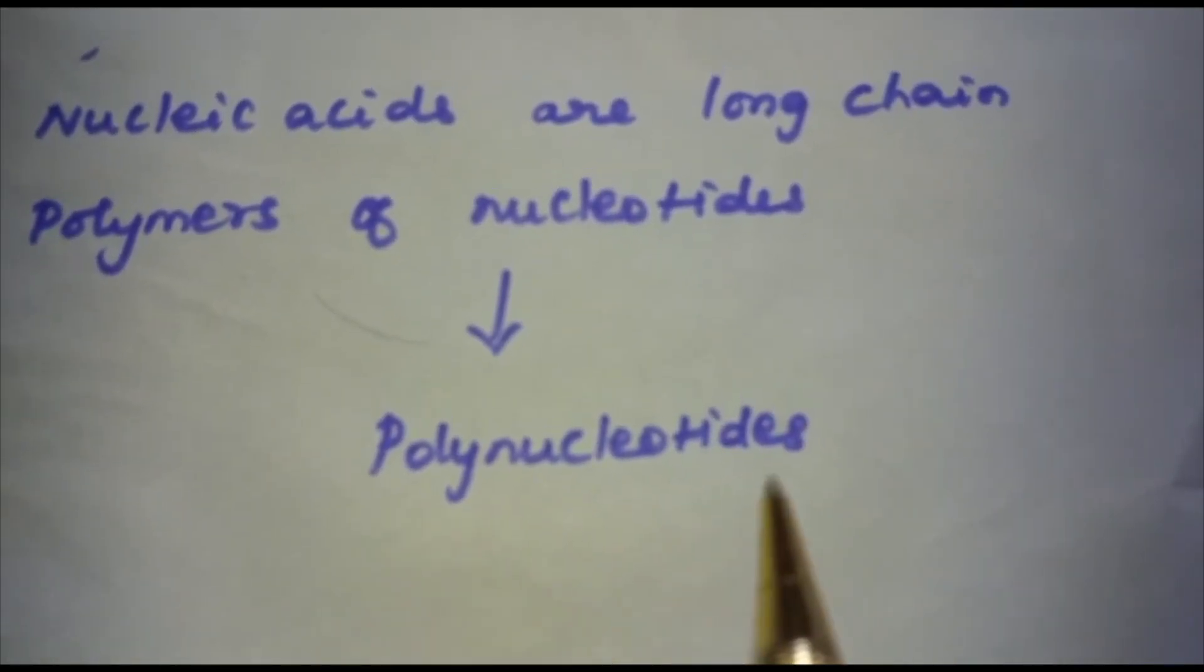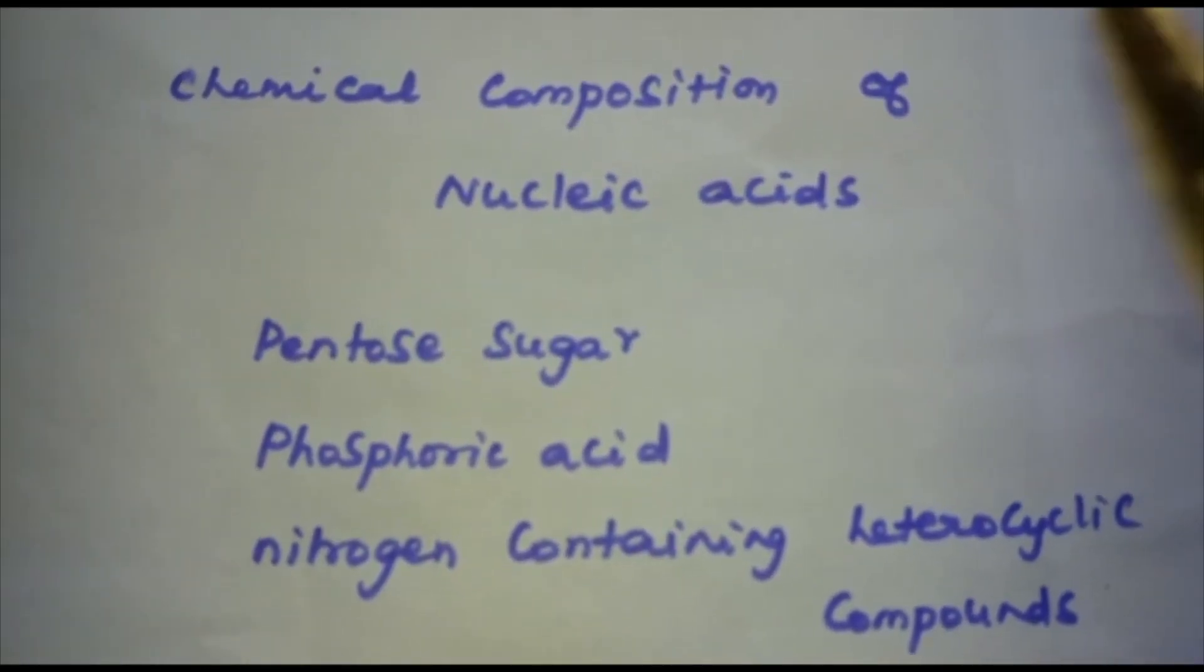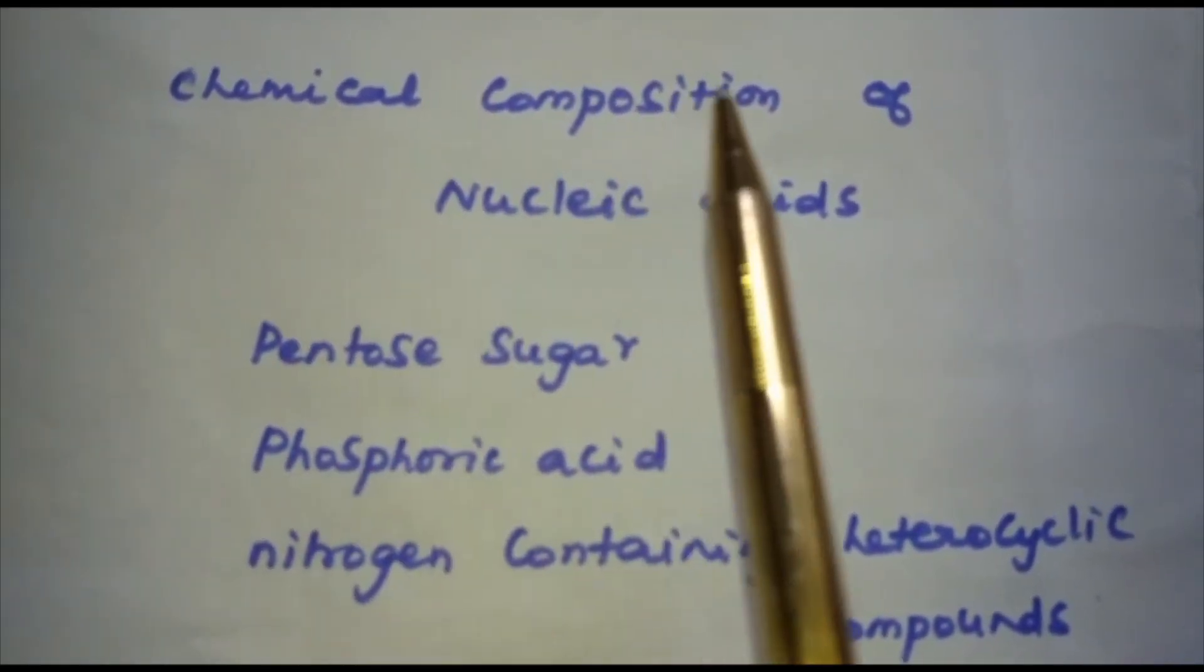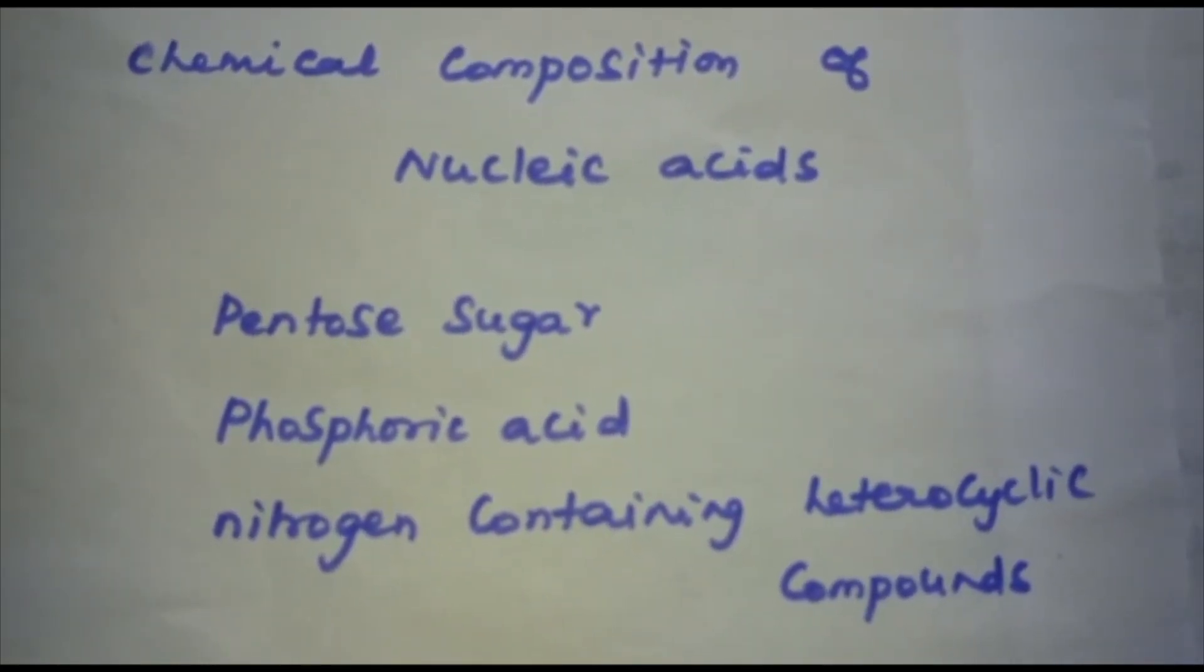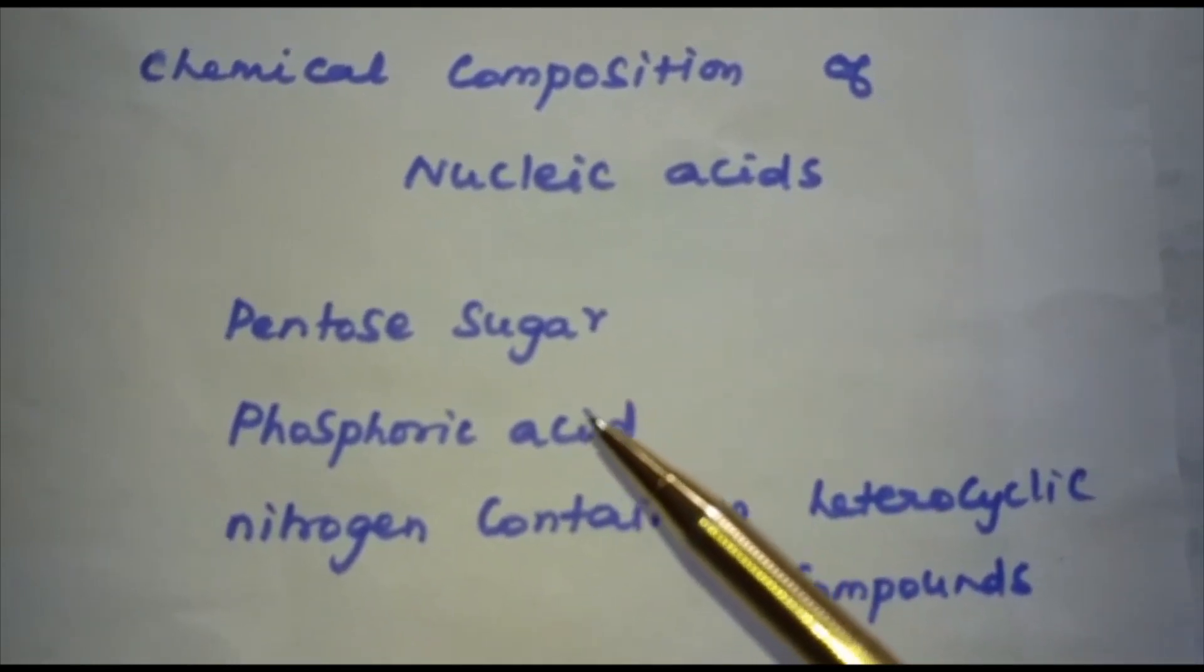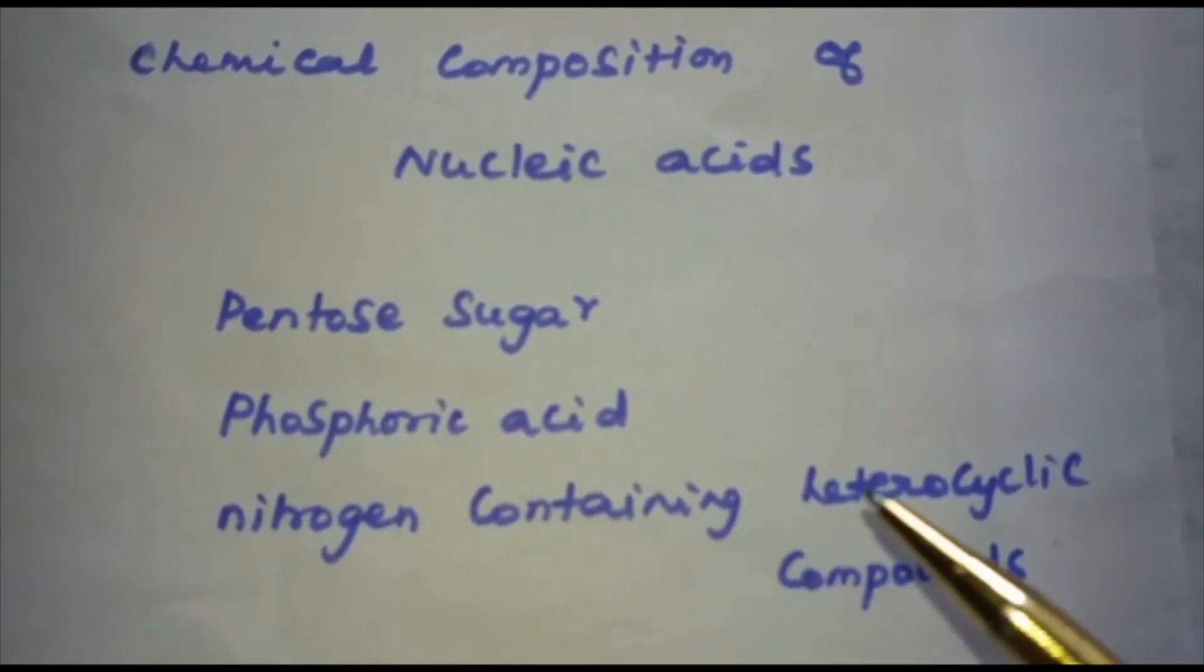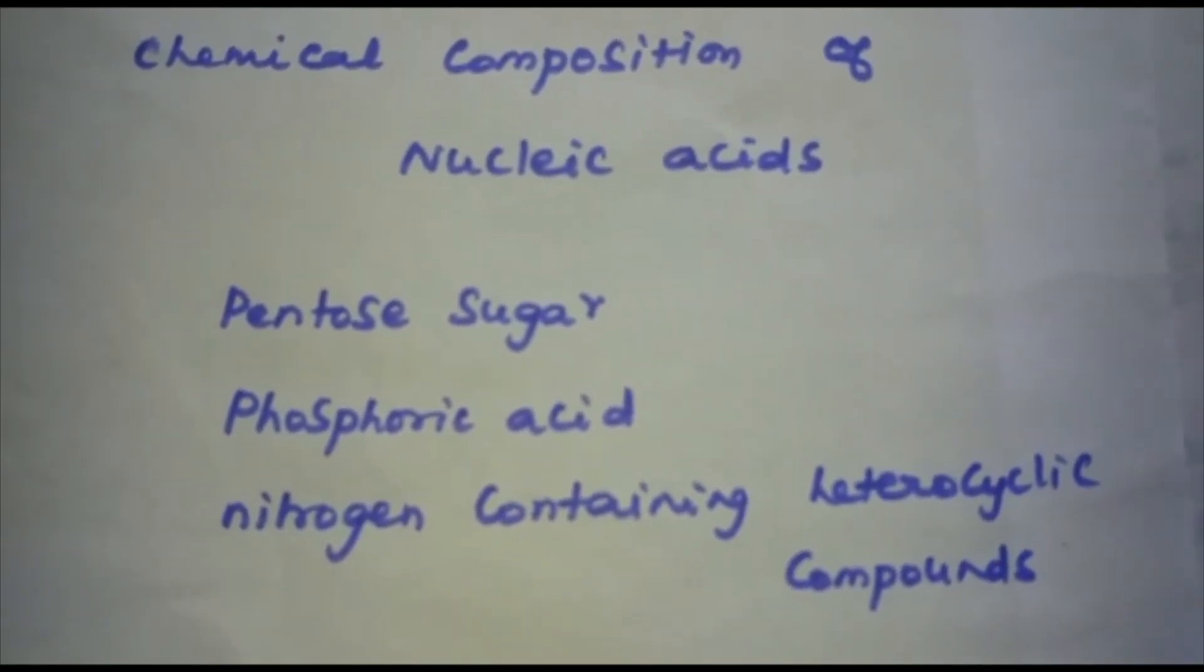Let us discuss the chemical composition of nucleic acids. Complete hydrolysis of DNA or RNA yields a pentose sugar, phosphoric acid, and nitrogen-containing heterocyclic compounds called bases. In DNA molecules, the sugar moiety is beta-deoxyribose, whereas in RNA molecules it is beta-ribose.